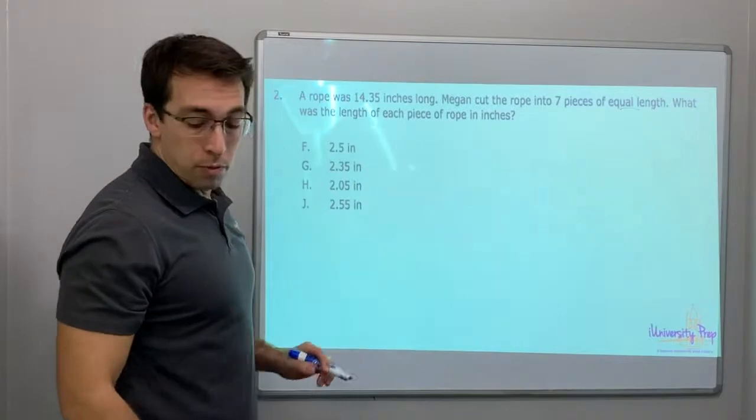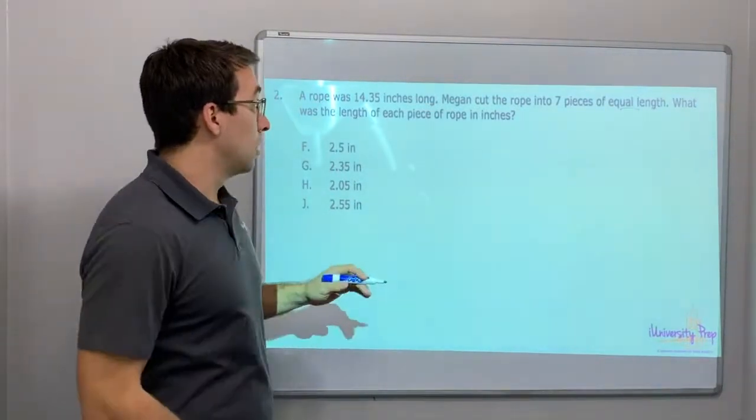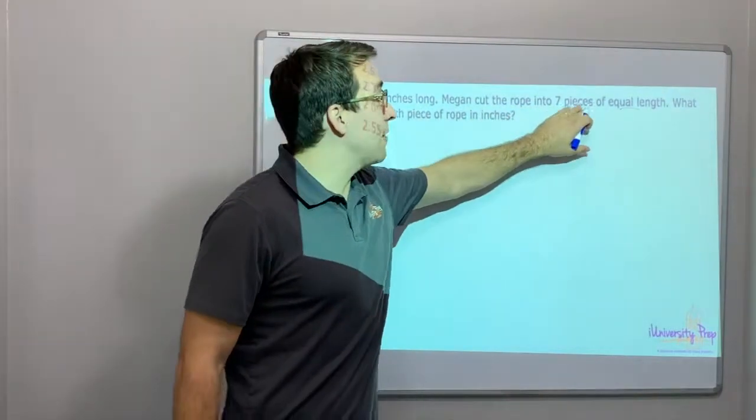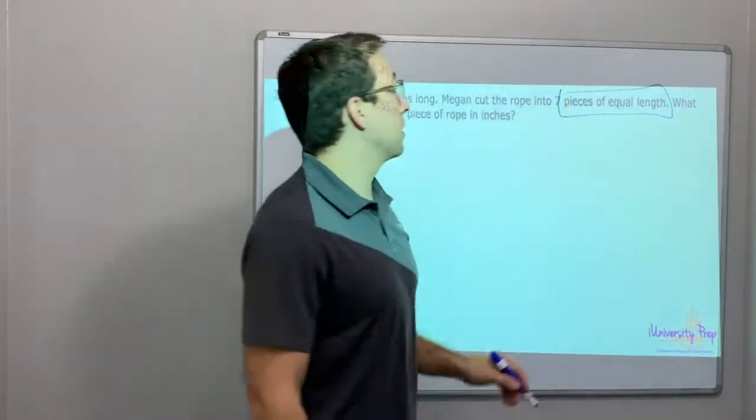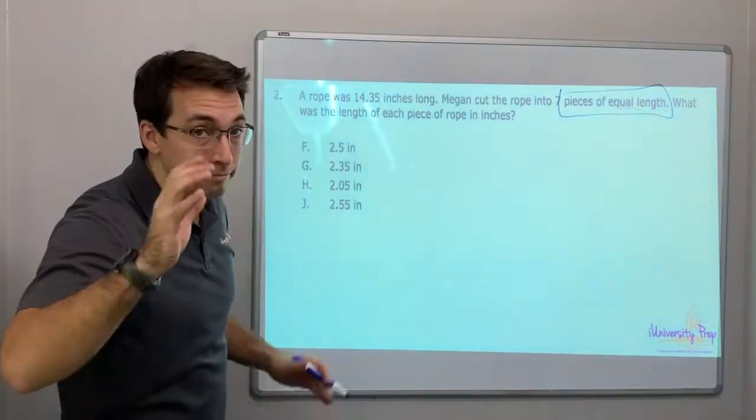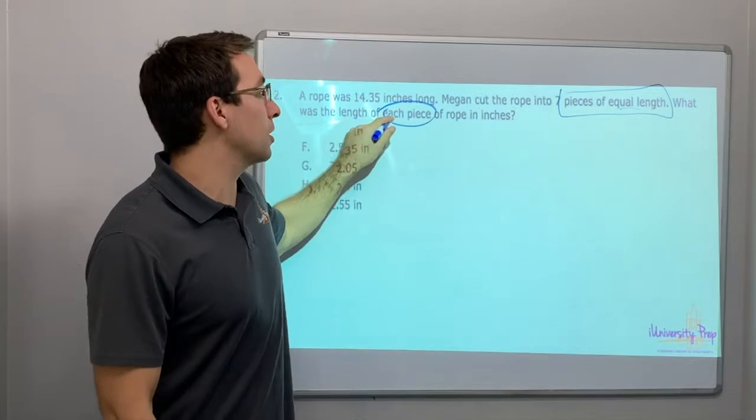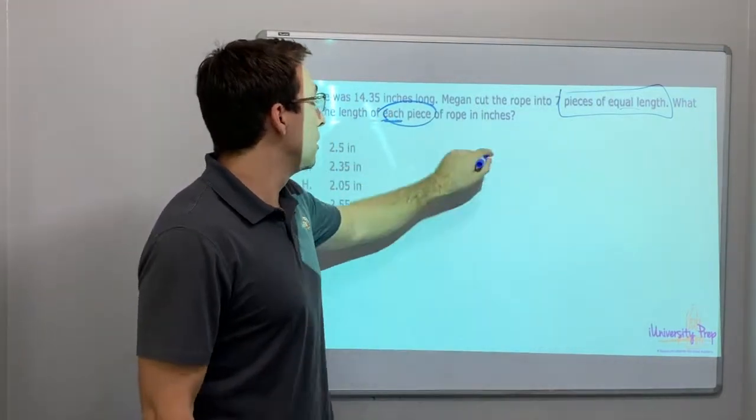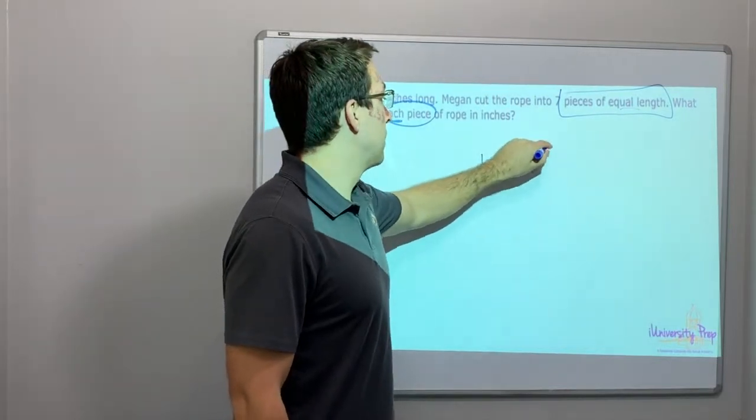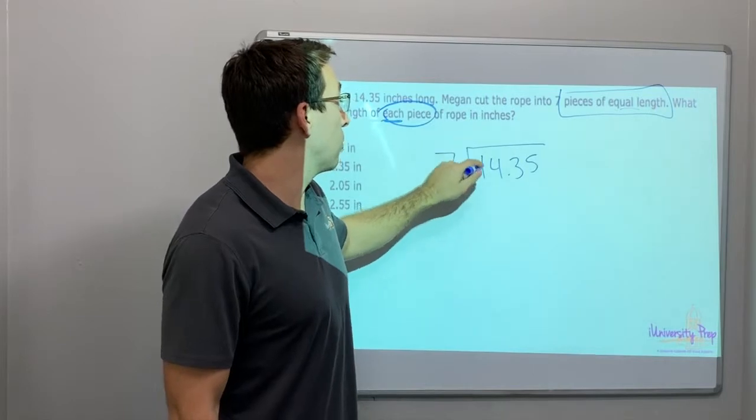A rope was 14.35 inches long. Megan cut the rope into 7 pieces of equal length. Equal length - division. What was the length of each piece? Remember I told you, each is going to be a division keyword. 14.35 divided by 7.